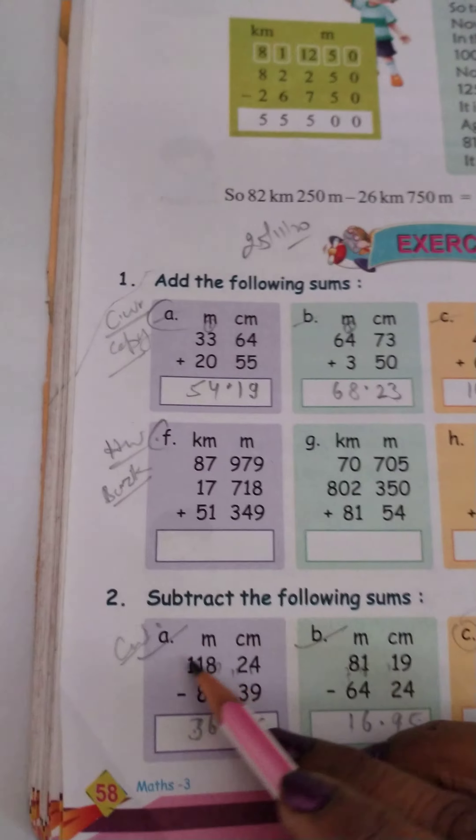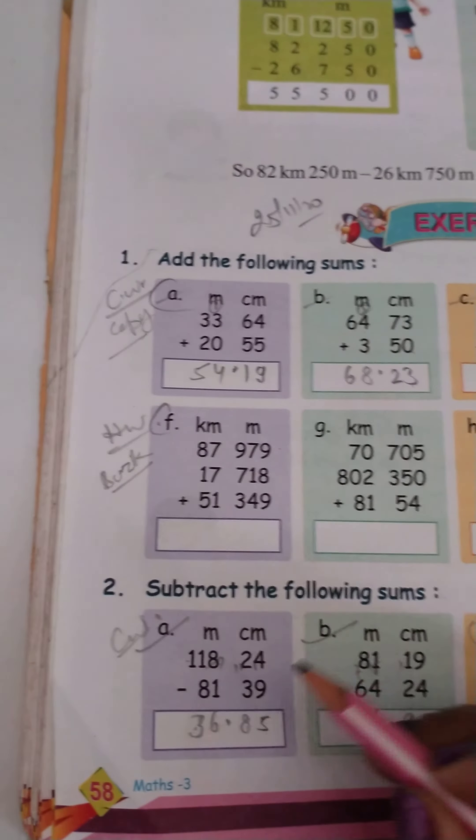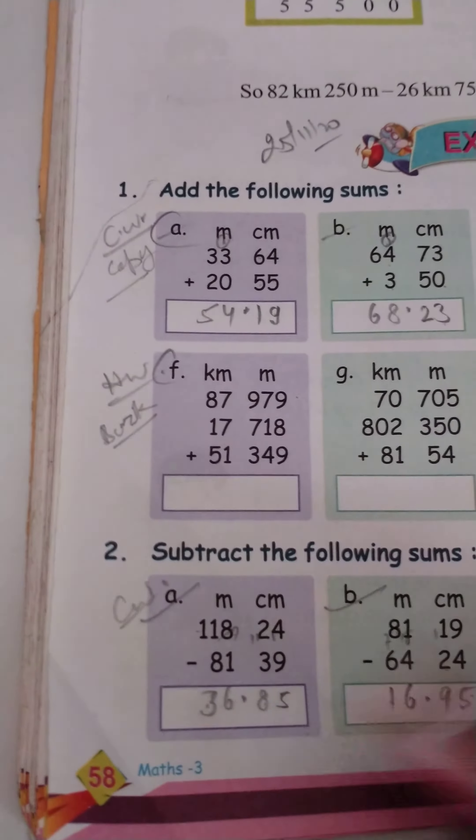Subtract the following sums. Here we have minuend. We have to cut it.